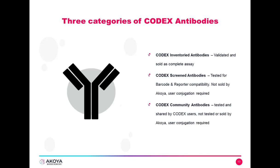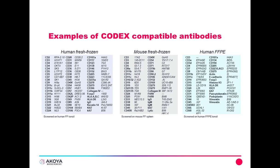There are three types of CODEX antibodies. We have CODEX inventoried antibodies, which are validated and sold as a complete assay. We have CODEX screened antibodies, which are tested for barcode and reporter compatibility — these are not sold by ACOIA but are user-conjugated. And then we have CODEX community antibodies, which are tested and shared by CODEX users, not tested or sold by ACOIA, also requiring user-conjugation. CODEX is compatible with both fresh-frozen and FFPE tissue, and compatible markers are shown here, with more always being added.